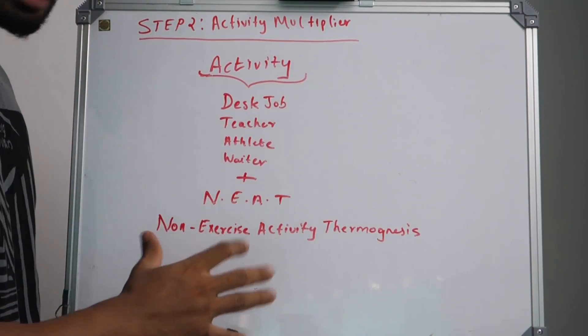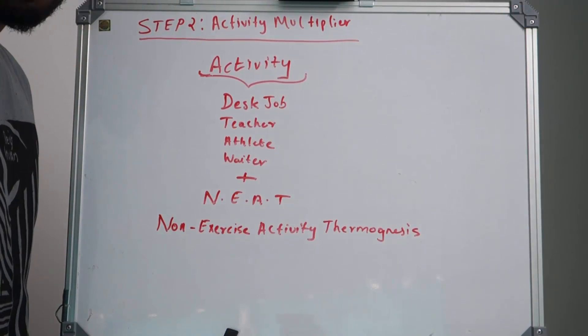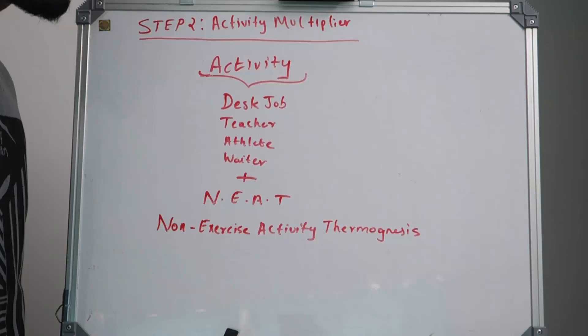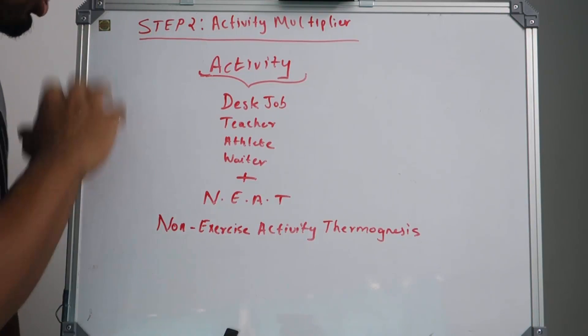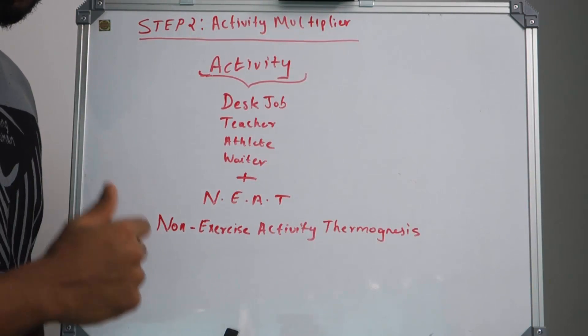Everything is included in NEAT. Non-exercise activity thermogenesis is basically your subconscious movements—it actually happens even if you don't want it to happen. All these things are included in the activity multiplier, so remember that as well.